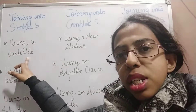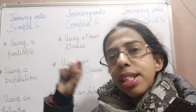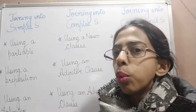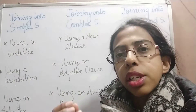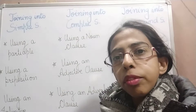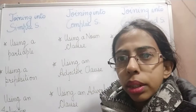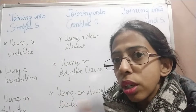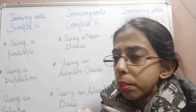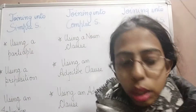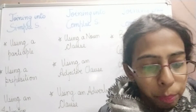What is a participle? It is a word ending in -ing which acts as an adjective for the noun. And what is an infinitive? It is 'to' plus a verb — to play, to run, to go. That is not a verb; it is a verbal. And we can also use a preposition.